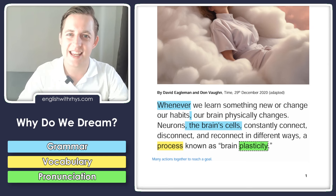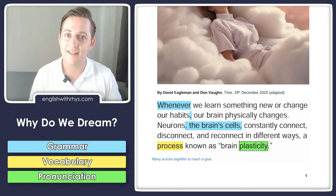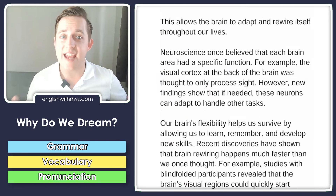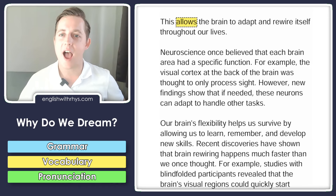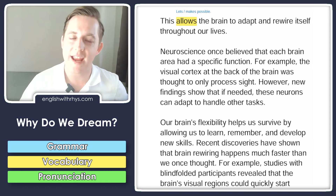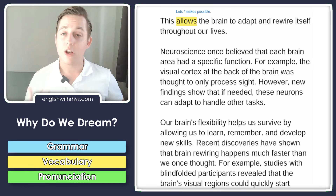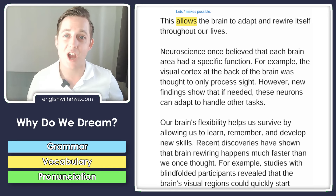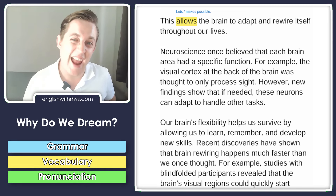Plasticity. It comes from the word 'plastic,' so you have to be careful — there is no K sound in this word. Plasticity. This allows the brain to adapt and rewire itself throughout our lives. 'Allows' means it lets the brain, or makes it possible for the brain to do this. For example: learning new things allows us to keep our minds sharp. Being nice to your teacher allows you to get extra help sometimes.